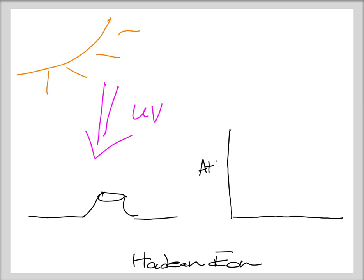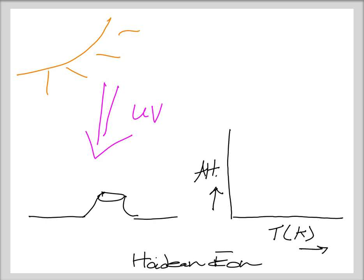Altitude is being indicated in the vertical sense, and temperature — it would be more customary from a science perspective to record temperature in units of Kelvin on the horizontal axis — is increasing from left to right in the horizontal sense. Given this very simple view, we have a hot planet where material is emerging from the inside.